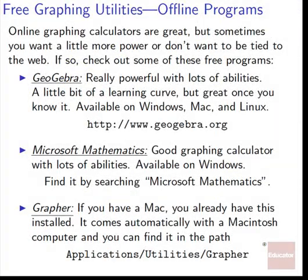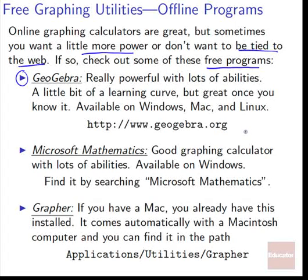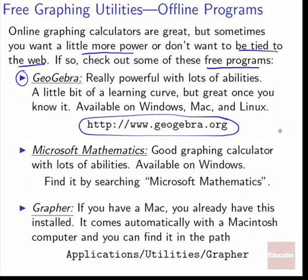Online graphing calculators are great, but sometimes you want a little more power, or you don't want to be tied to the web all the time — you might not always have an internet connection. If so, check out some free offline programs you can use anytime. GeoGebra is the first one: it's a really powerful graphing calculator with lots of other abilities too. It has a little bit of a learning curve, but it's great once you know it. It's available on Windows, Mac, and Linux — truly cross-platform, so you can use it on pretty much any computer.